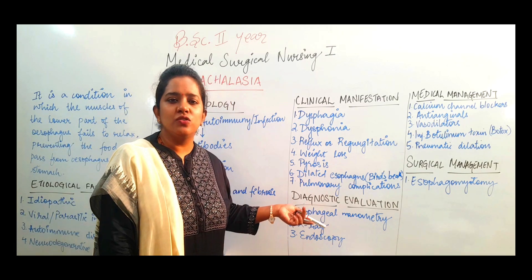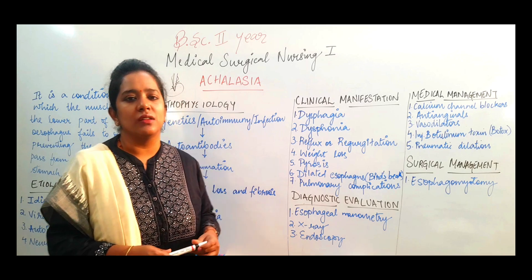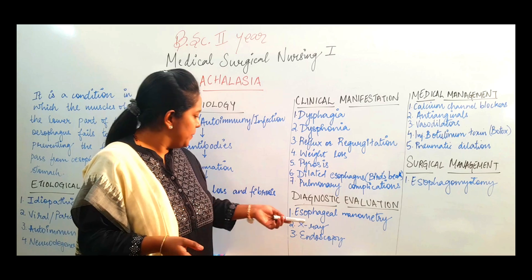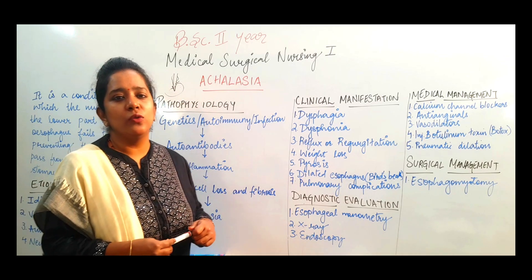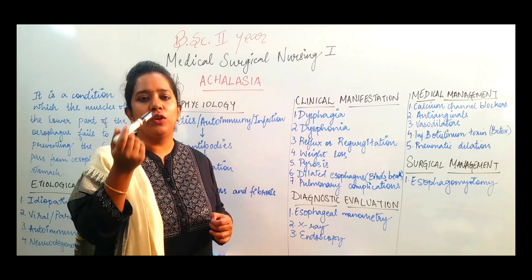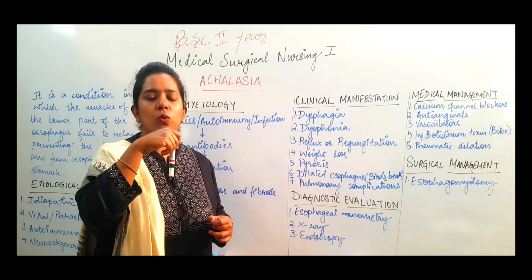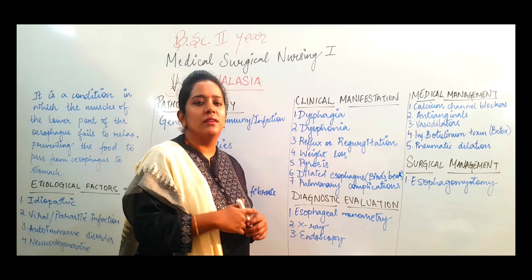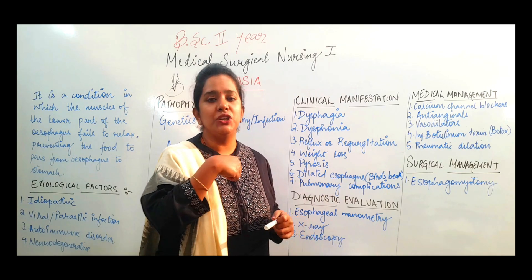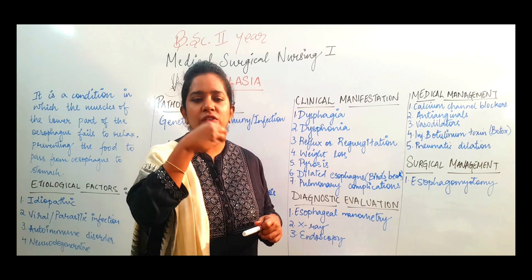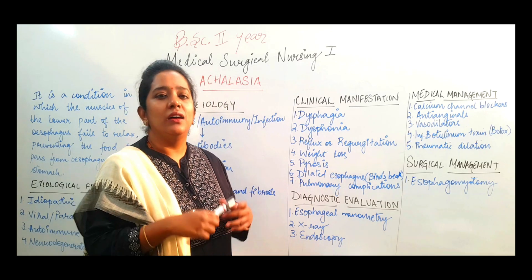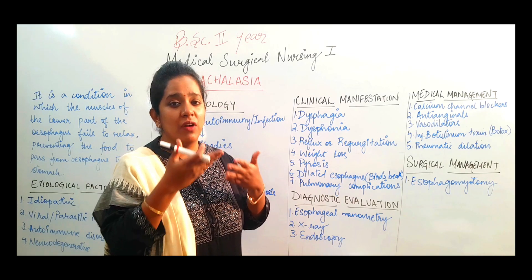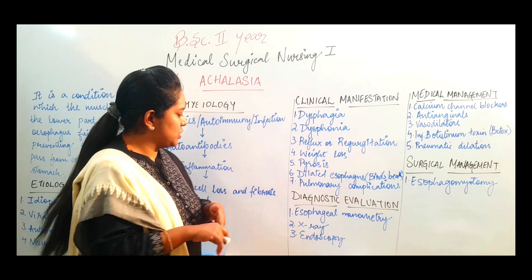We can also perform esophageal manometry, in which the tonicity of muscles can be measured. Next is upper endoscopy — a thin tube with attached light and camera is inserted through the mouth into the esophagus, allowing us to visualize the lumen condition and esophagus health — including how much the dilated portion has expanded, and the condition of the constricted portion in the distal part.